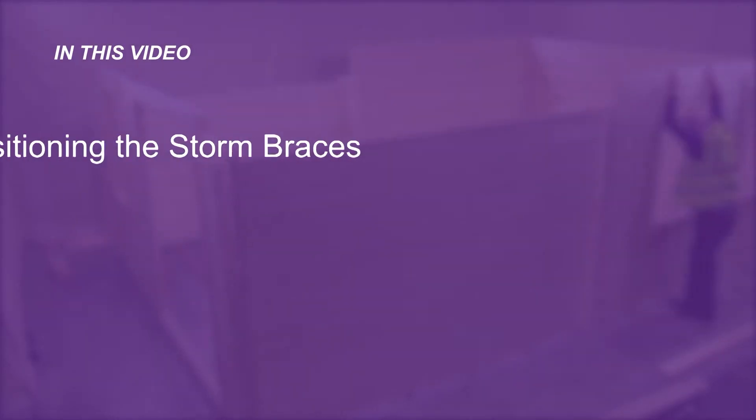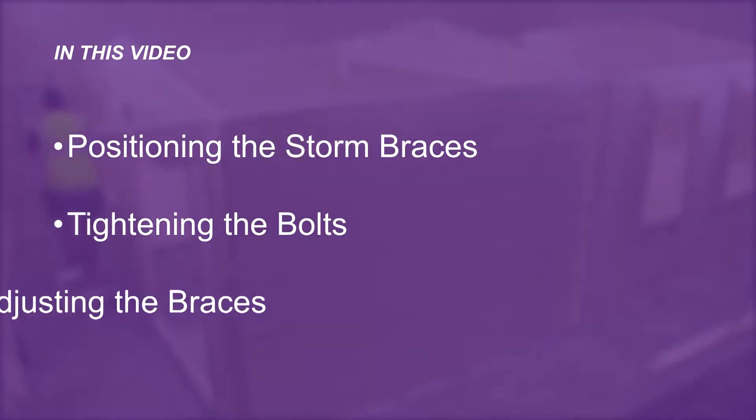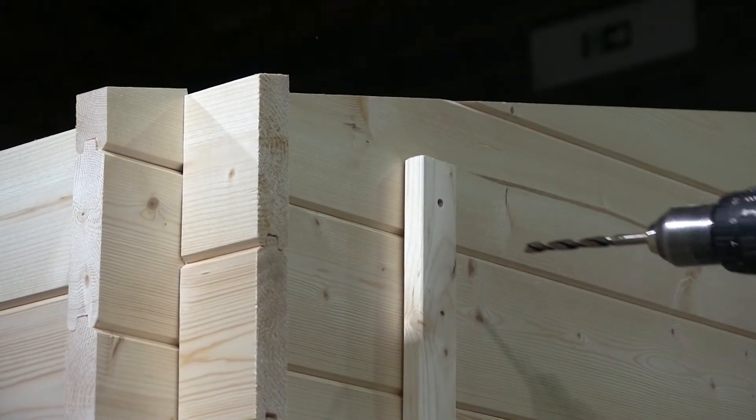The storm braces are designed to prevent the roof from lifting up in strong winds. Their design allows for the logs to expand and contract naturally, but still join the walls together in emergency situations.